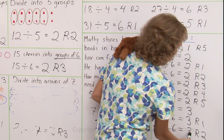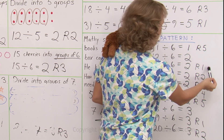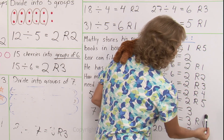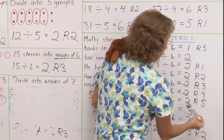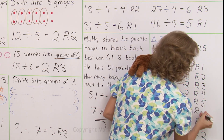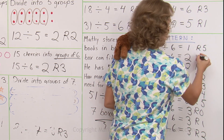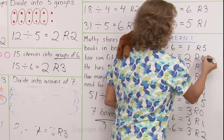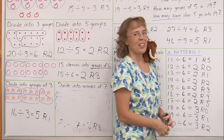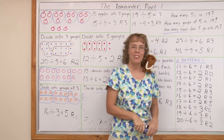The quotients go 1, 2, 2, 2, 2, 2, 2, 3, 3, 3 — and the remainders are increasing. Some of these actually have remainder 0 — we could write it in to complete the pattern. We're all done with this lesson.